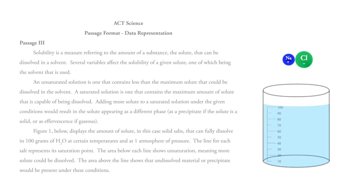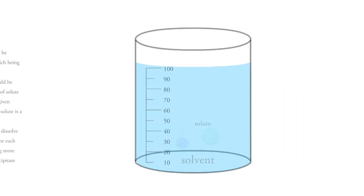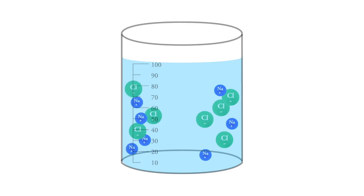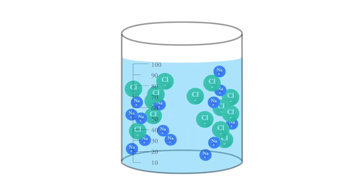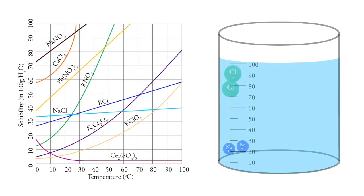The beginning would tell you that there are these salts — solutes — and they get dissolved into a solvent, in this case water. There's a maximum: we can put in some salts and they just dissolve, but at some point nothing more gets dissolved and it just drops to the bottom. Figure one shows the maximum salts you can add to 100 grams of water before that limit is reached, and it varies across temperature — warmer water can dissolve more salt.